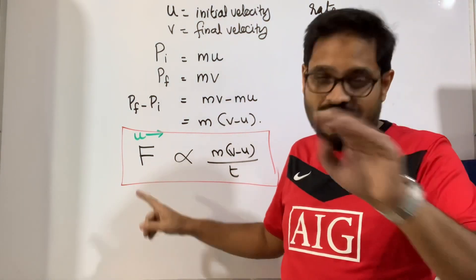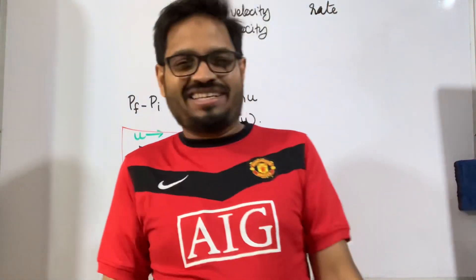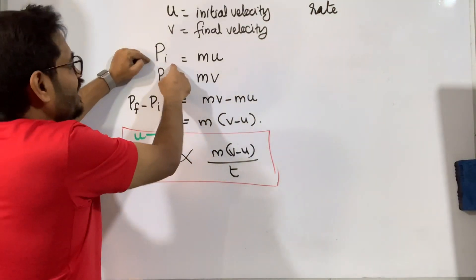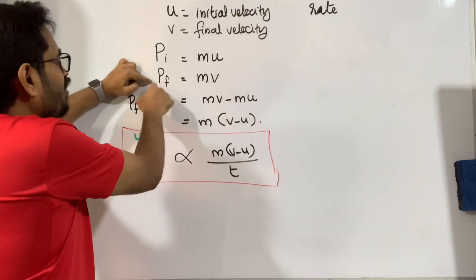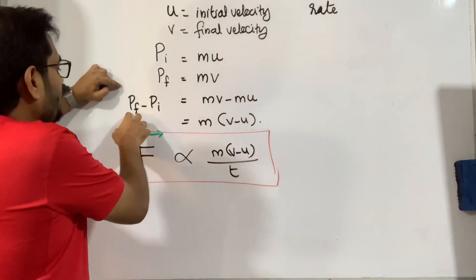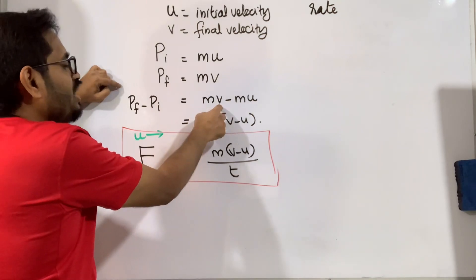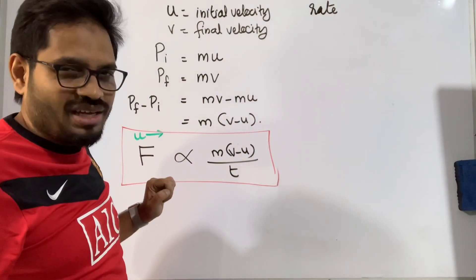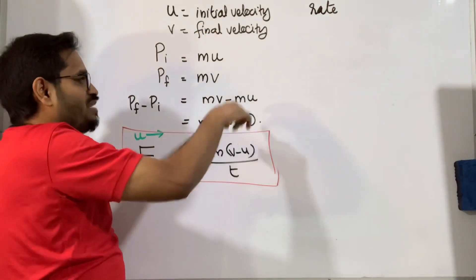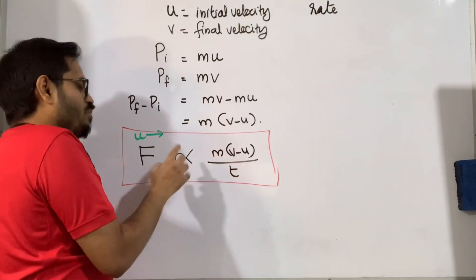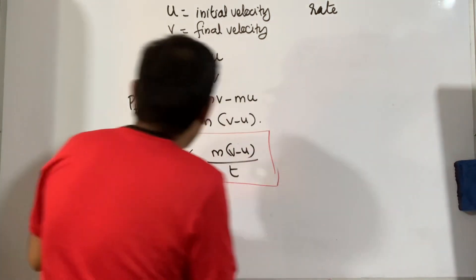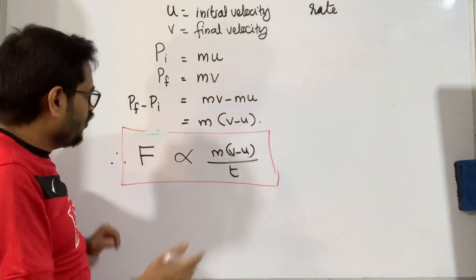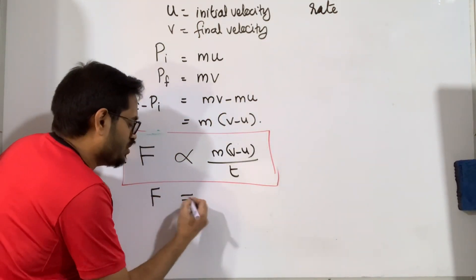After writing the initial statement, we continue: we know that initial momentum is m × u and final momentum is m × v. So the change in momentum is mv − mu, which equals m(v − u). According to Newton's Second Law, m(v − u) is directly proportional to F. Therefore, F is directly proportional to m(v − u). To remove the proportionality sign, we write F = k × m(v − u) / t, where k is a constant.